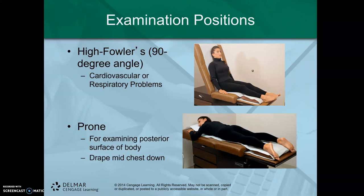Now going the other direction on the bottom right-hand side is prone. The prone position is face down, patient's back side up. The gown should be open to the back when placed on the patient, and drapes should go all the way from shoulders down to ankles.